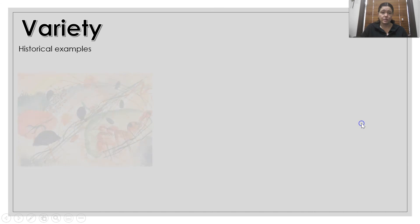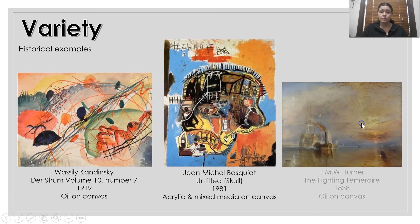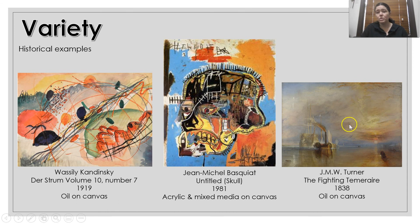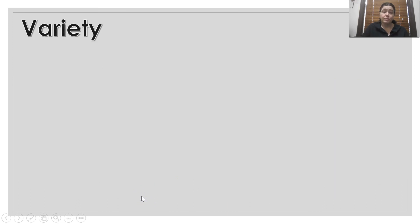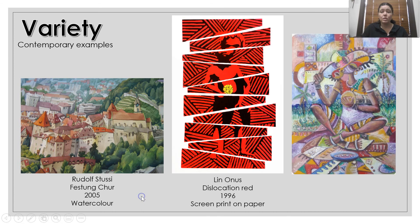Some historical examples of variety: the Turner work — even though you might not look at this and think it's got variety, it's got variety of brushstrokes. He's quite heavy with his brush in some areas but very smooth in others. Basquiat was showing beautiful variety within his work with different types of stroke and mark making, as is Kandinsky. Some contemporary examples of variety — all showing variety in a different way.